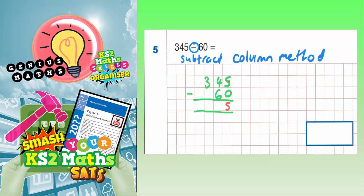4 subtract 6—well, we can't do that because 4 is less than 6. You can't take 6 off 4, so we need to borrow from the next column. We cross out the 3, and the 3 becomes a 2, and the 1 we borrowed turns the 4 into 14.